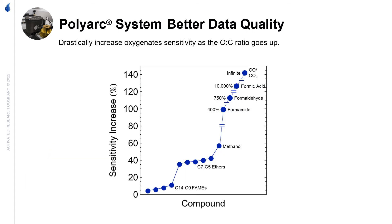Besides the universal carbon response shown on the previous slide, the other benefit the PolyArch system can provide is an increase in sensitivity. This depends on the ratio of oxygenates or other functional groups present relative to the number of carbons. More substitution present on an analyte will result in a greater increase in response when it's converted to methane.